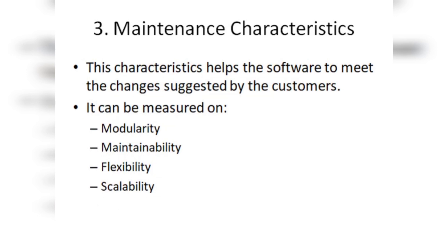The next characteristic is maintenance characteristics. Maintenance ka matlab hai: how much additional effort do you need to put in to keep your software working as efficiently as it did on day one? This is calculated with respect to modularity. Modularity means if your software is built with respect to modules, then it is maintainable. If there is a problem in one module, we replace or correct only that module and the rest of the software is unaffected. So greater the modularity, the more maintainable your system is.